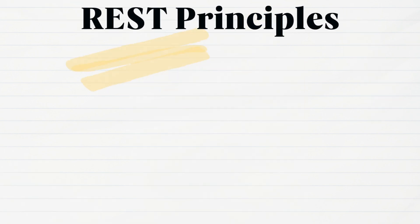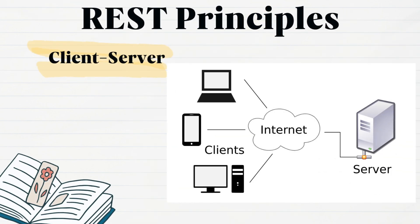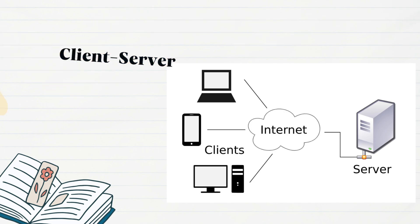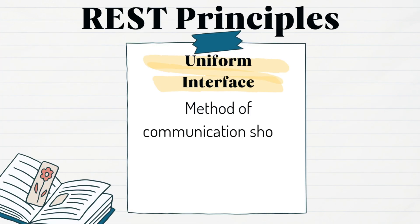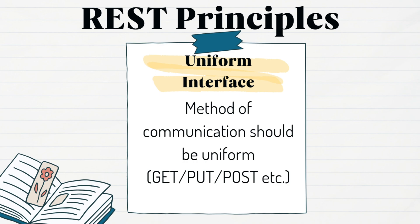The second principle is client-server architecture. The client and server are separate entities that interact through a well-defined interface, which is the API. The next principle is uniform interface. The method of communication between client and server must be uniform. This typically involves using standard HTTP methods like GET, POST, PUT, etc.